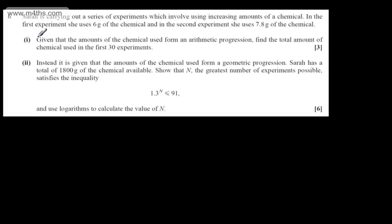In the first part of the question, for three marks, it says, given that the amounts of the chemical used form an arithmetic progression, find the total amount of chemical used in the first 30 experiments.